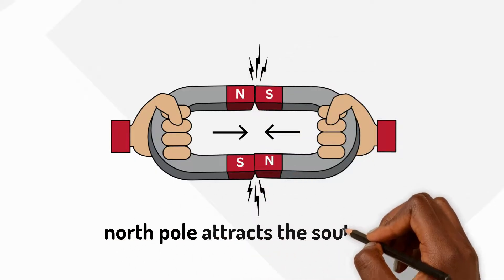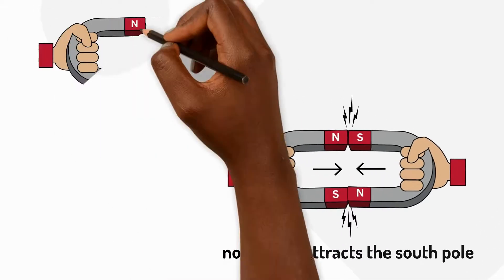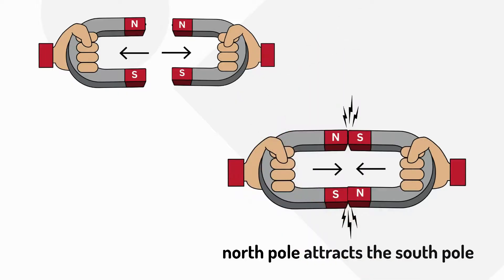The north pole of one magnet will attract or pull the south pole of another magnet towards it. But if you try to put two north poles together, they repel or push away from each other. Magnetic force is a non-contact force that can both push and pull.